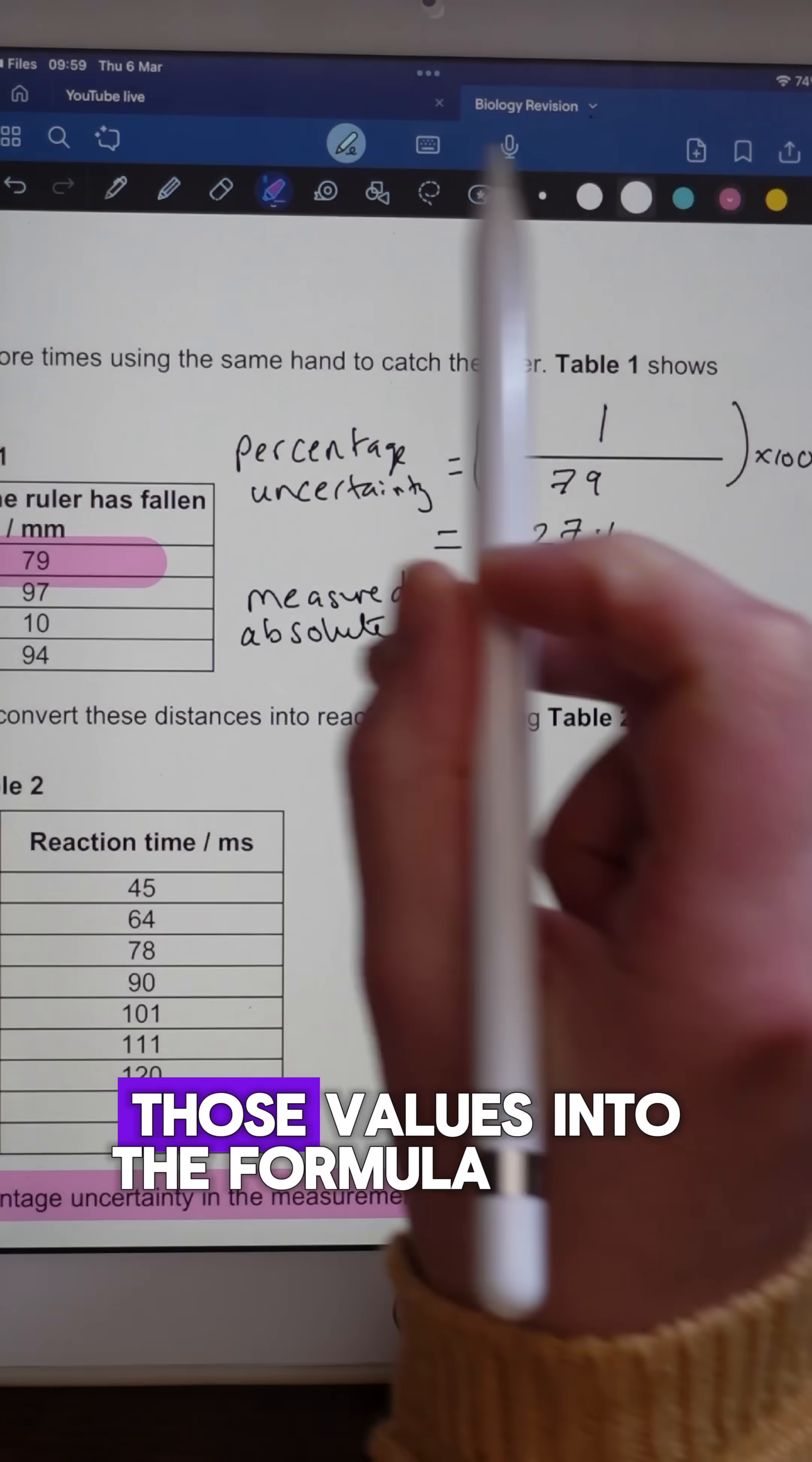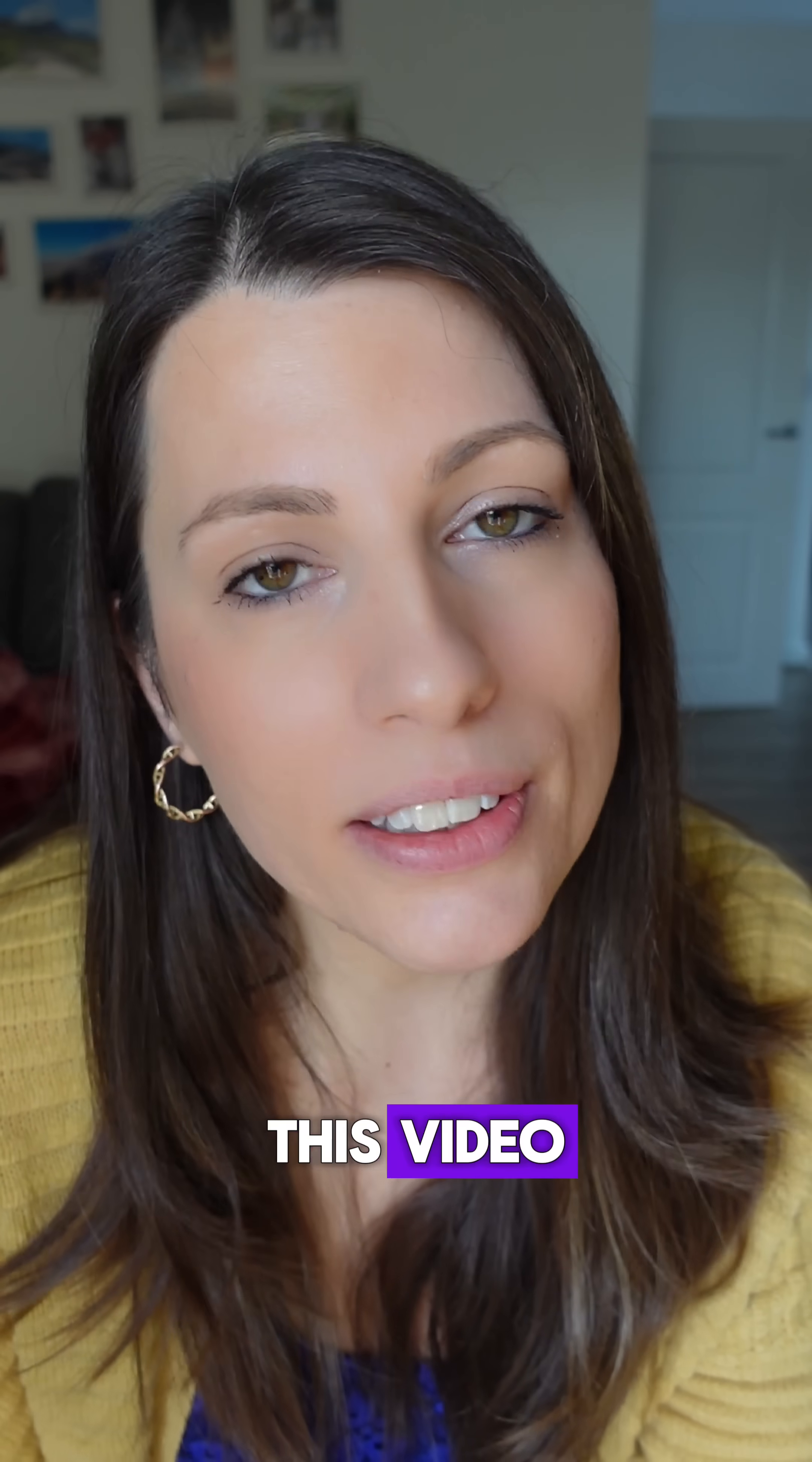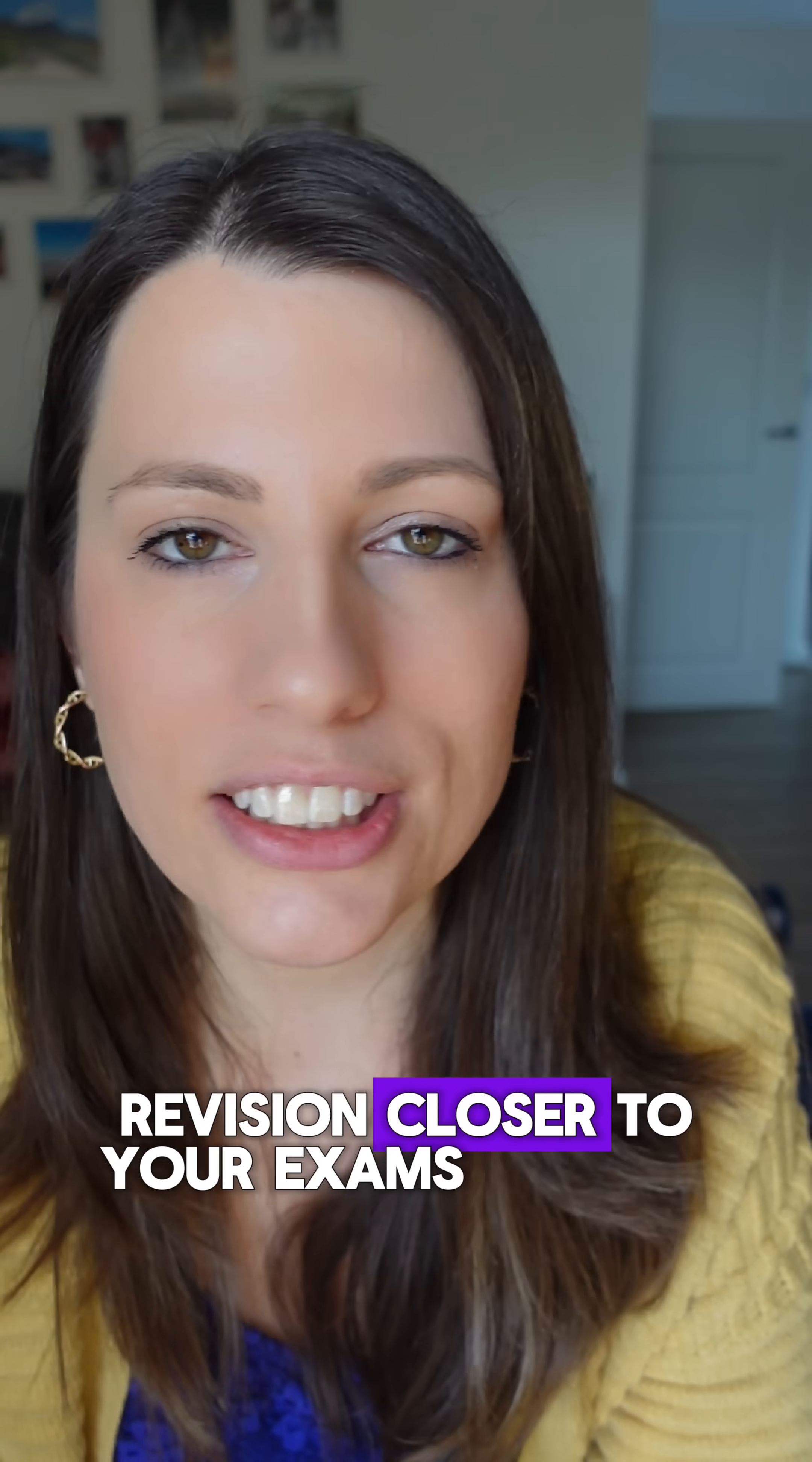We can then substitute those values into the formula and that gives us 1.27%. Make sure to save this video so that you can use it for your revision closer to your exams.